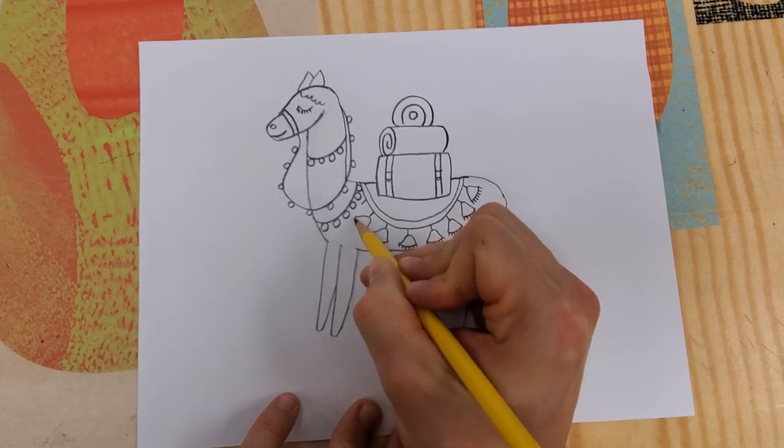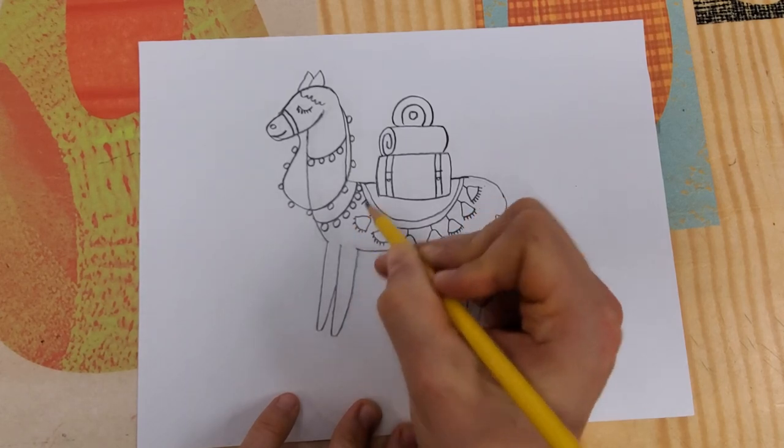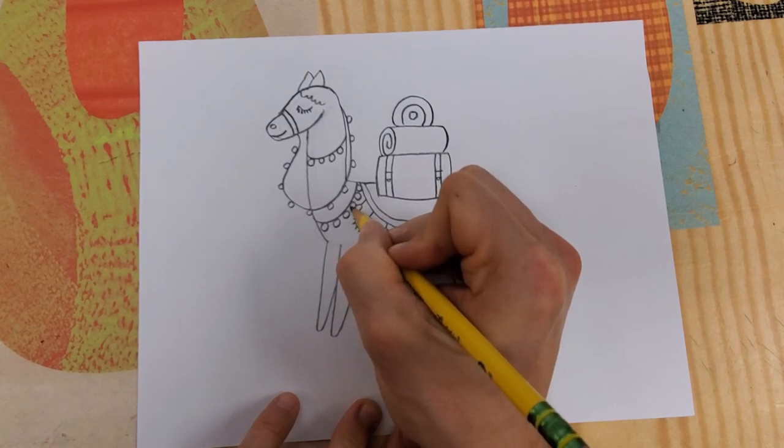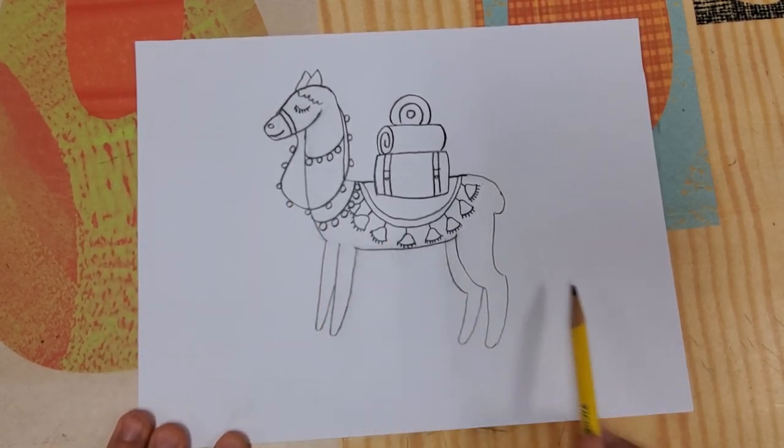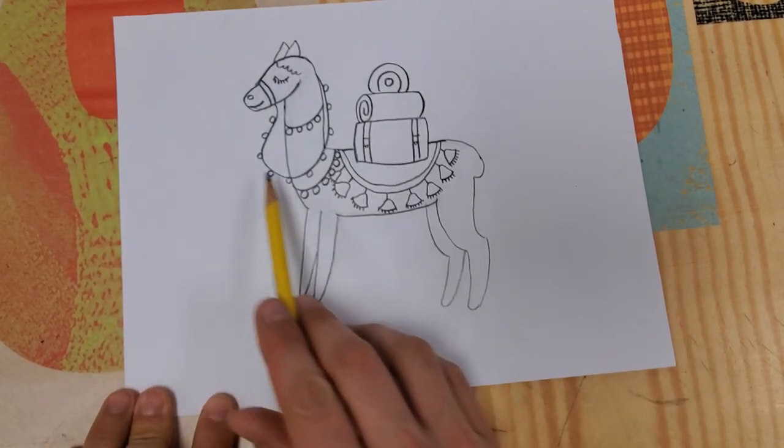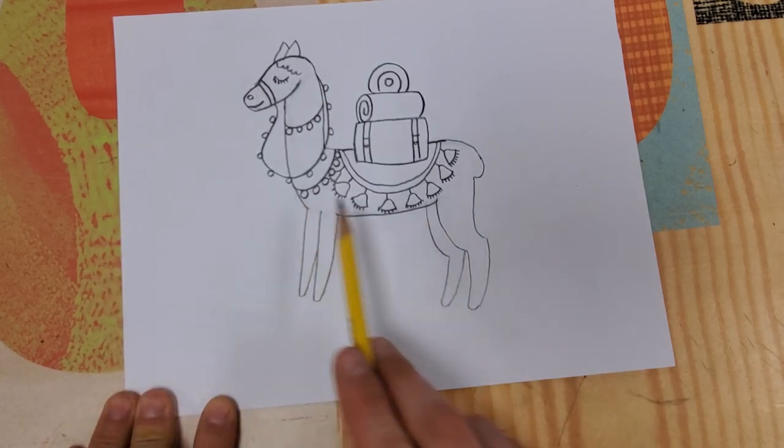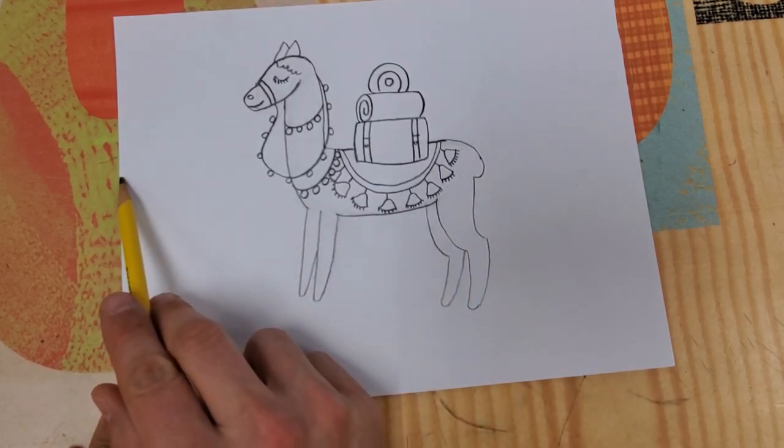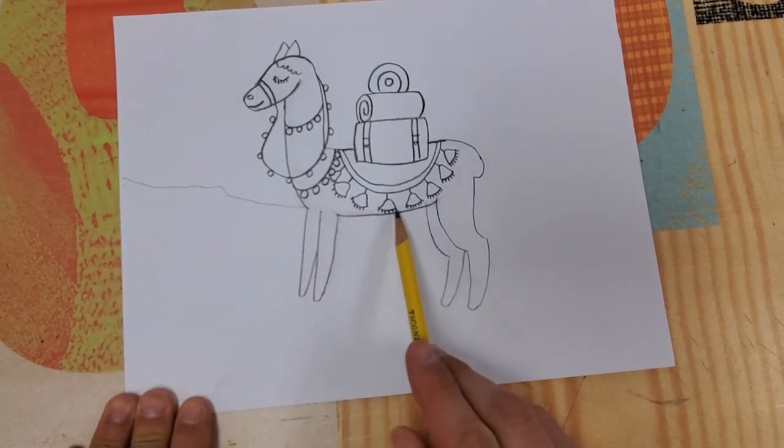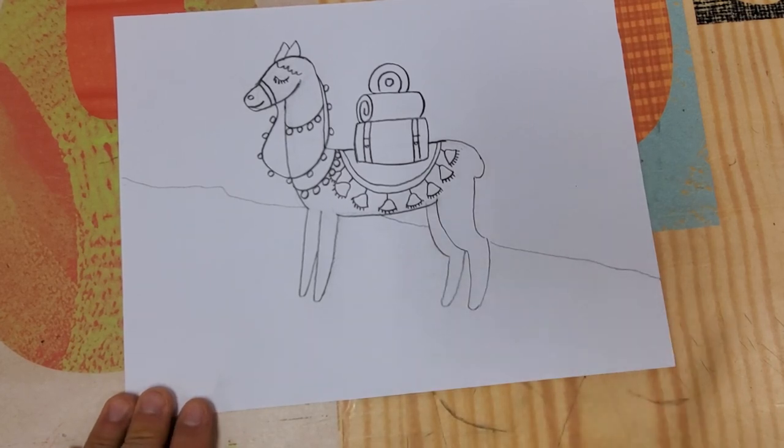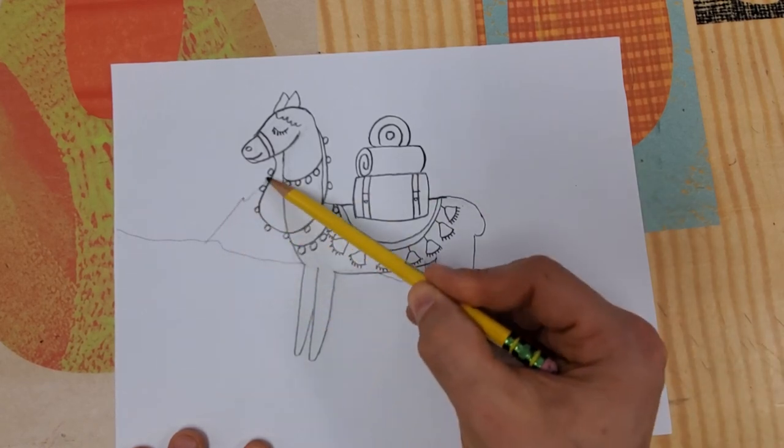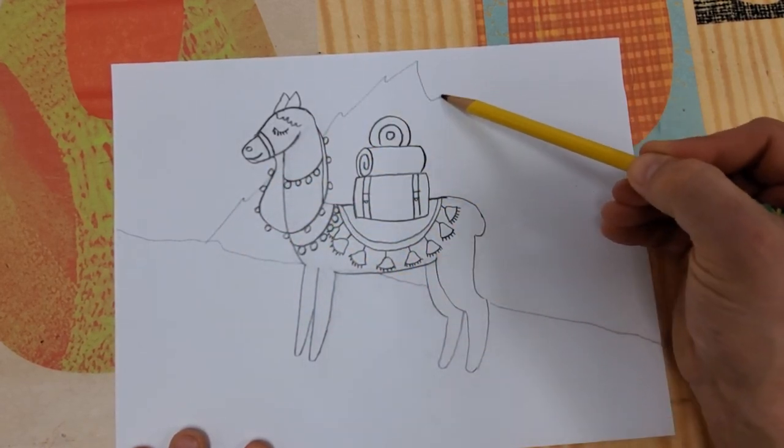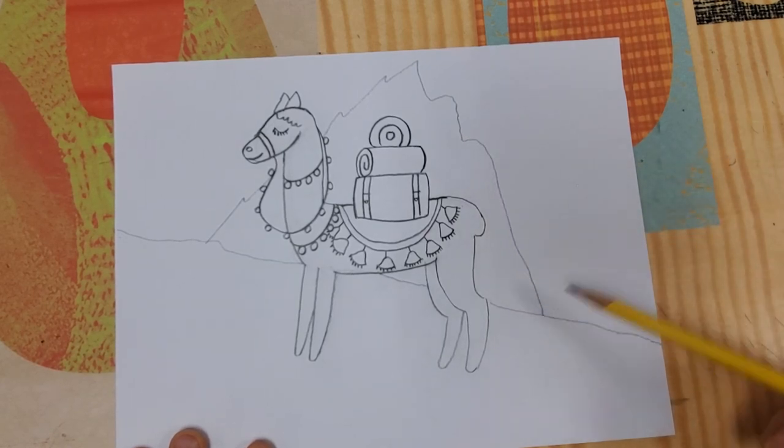And the last thing we will add are the mountains that this alpaca is near. To represent that it is on an incline, the line that I'm going to use to show the ground is not going to be straight across. It's going to come down here at an angle underneath here and out the back. And lastly, we're going to show that the country of Peru is very mountainous. So I'm going to take one mountain here.